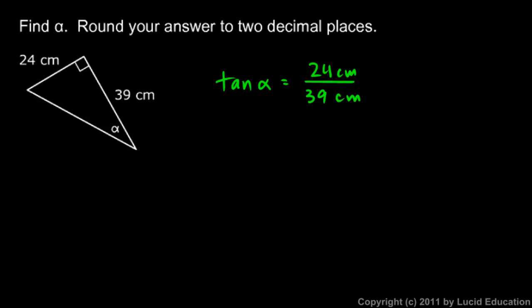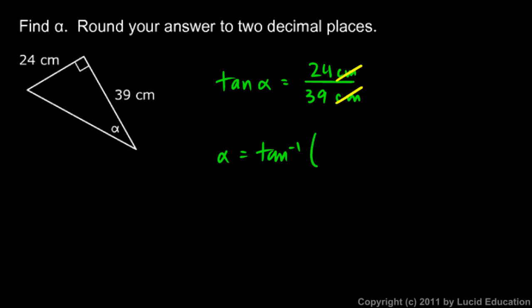If the tangent of alpha equals 24 over 39, then alpha has to be the inverse tangent of that value. So alpha equals the inverse tangent of 24 over 39.